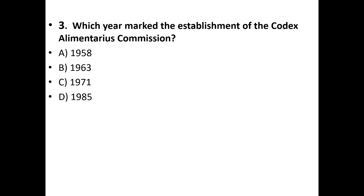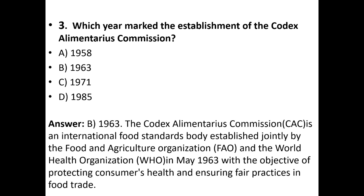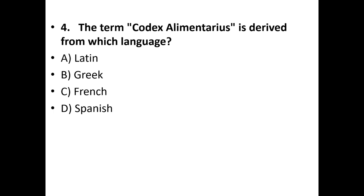Third question: Which year marks the establishment of the Codex Alimentarius Commission? Options: 1958, 1963, 1971, or 1985. The answer is option B — 1963. The Codex Alimentarius Commission is an international food standards body established jointly by FAO and the World Health Organization in May 1963, with the objective of protecting consumers' health and ensuring fair practices in food trade.